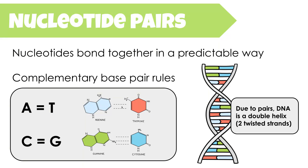When nucleotides pair in this way, we get a twisted shape to DNA that we call a double helix — double referring to the fact that it's two strands, and helix referring to the twisted shape.